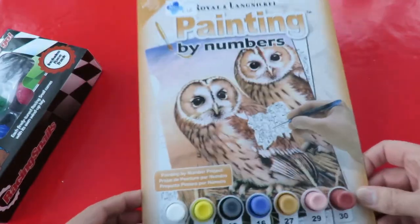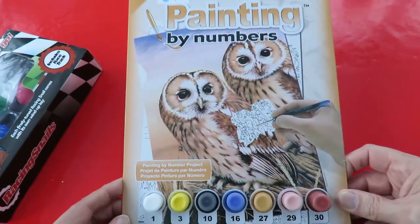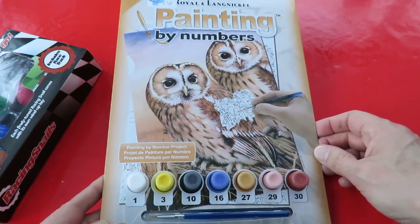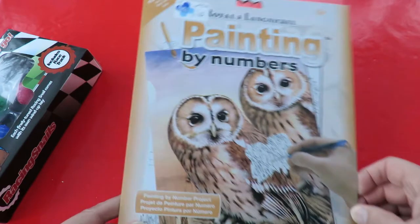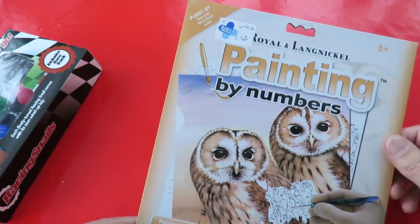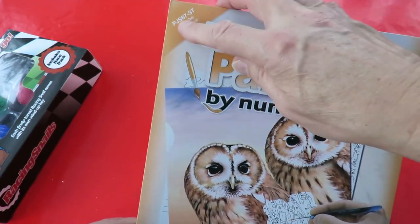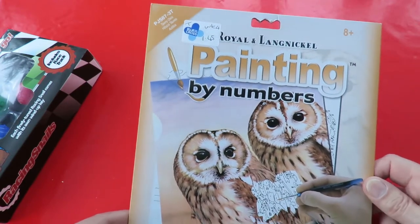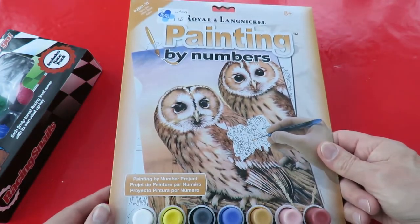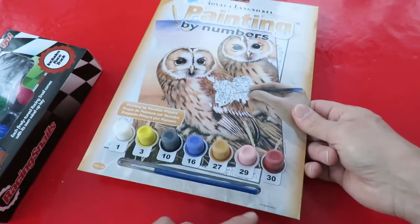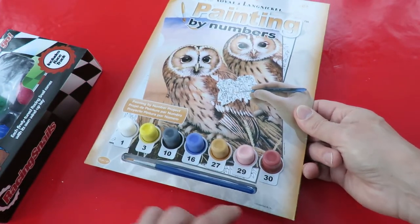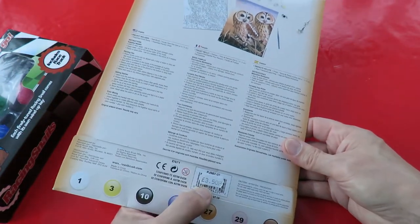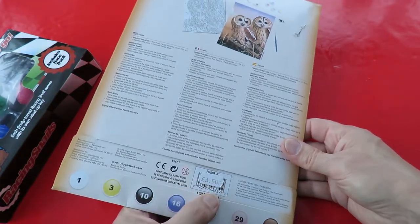And then the other thing I bought was this painting by numbers. A couple of tawny owls I think. Yeah, tawny owls PJS873T whatever that means. 2014, £3.50 originally. Last time it was sold anyway.